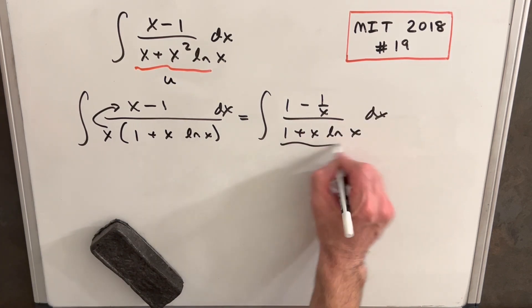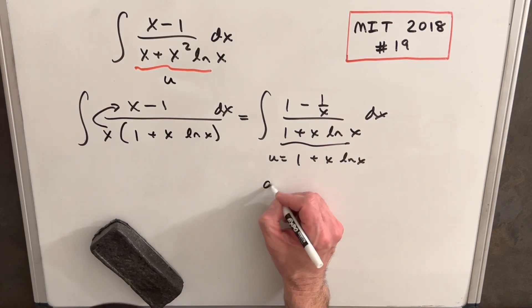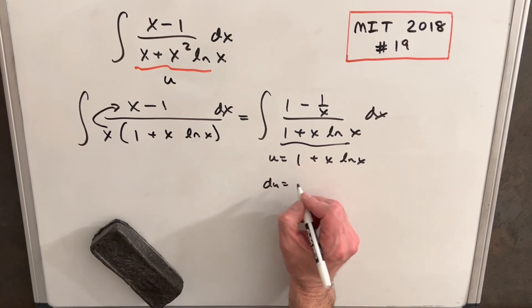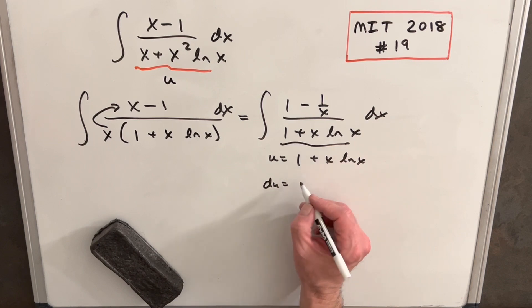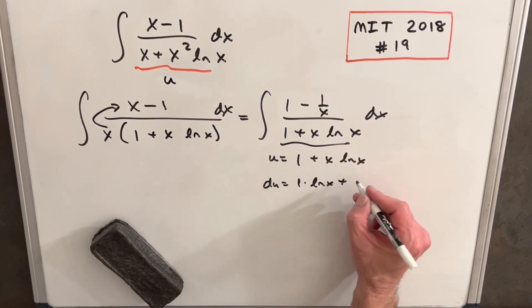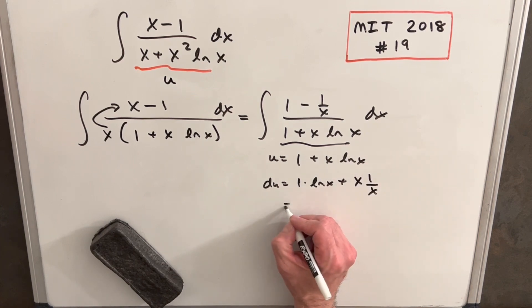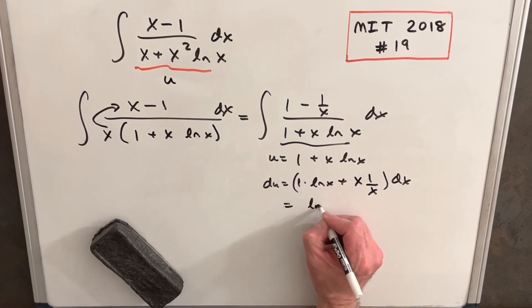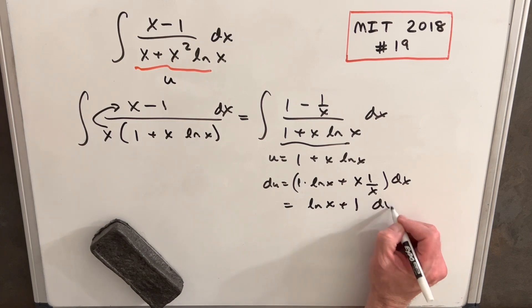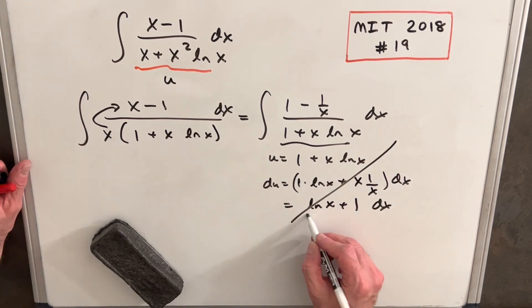Let's just try this as our u and see what happens. We'll take the derivative du. Derivative of 1 is zero. Derivative of this, we're just going to use the product rule: derivative of x is 1 times ln(x) plus x, derivative of ln(x) is 1/x, dx. So this whole thing is just going to be ln(x) + 1 dx. This doesn't match this, but I think we're getting somewhere.